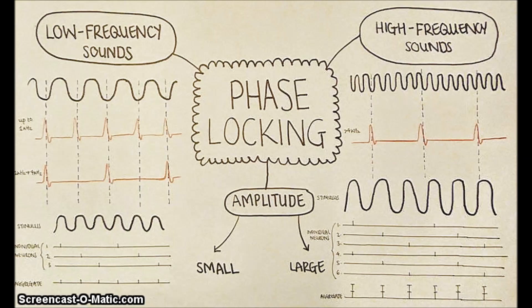At low frequencies, it's possible for neurons to fire action potentials for every cycle. This makes it easy to determine the frequency of the sound, because it's just the same as the frequency of the neuron's action potentials.